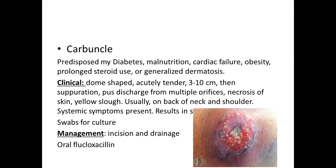It may be predisposed by diabetes, malnutrition, cardiac failure, obesity, prolonged steroid use, or generalized dermatosis. Dome-shaped, acutely tender, may become 3 to 10 centimetres. Then separation occurs, pus discharge from multiple orifices, necrosis of skin, yellow slough — usually on the back of neck and shoulder. Systemic symptoms may be present; results in scarring. Swabs are needed for culture. In addition to topical and systemic antibiotics, incision and drainage is a must.